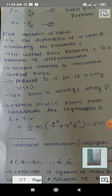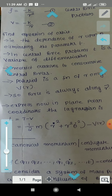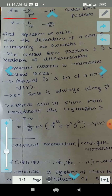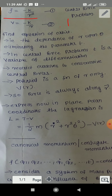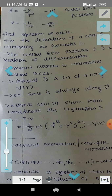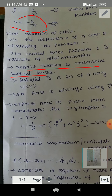We will consider central forces of the form F equal to minus K by R squared. We will restrict ourselves to conservative central forces, and the potential is minus K by R.